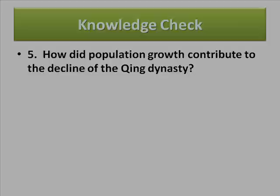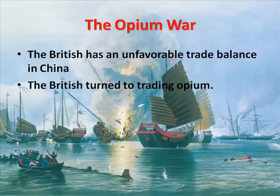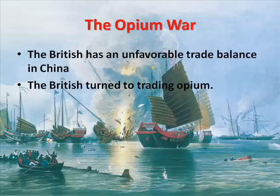The Opium War. By 1800, Europeans had been in contact with China for more than 200 years, but European merchants were restricted to a small trading post at Canton. The British did not like this agreement. The British also had a trade imbalance with China — Britain imported tea, silk, and porcelain from the Chinese, and sent Indian cotton to China to pay for these imports.